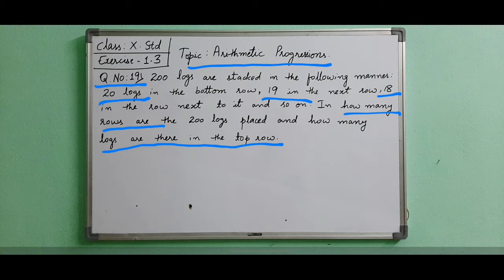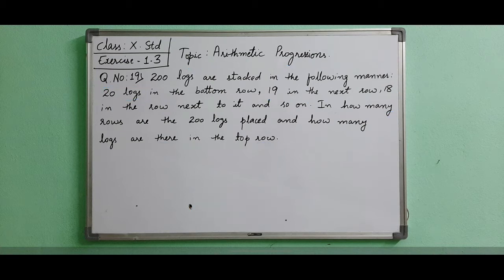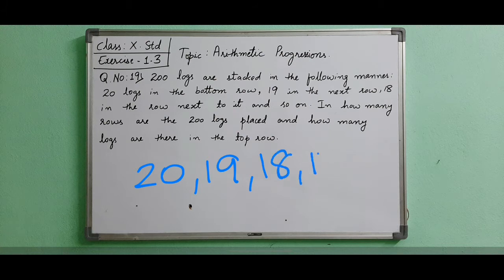It is given 20 logs are there in bottom row. In the bottom it has 20 logs. Like this it has 20 logs, then one less, so it is having 19. So it can be written as the first term is 20, the second will be 19 and the next will be 18, next will be 17 and so on. Like this they are placing the logs.